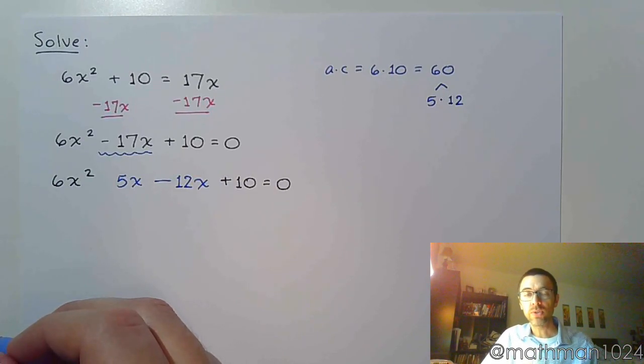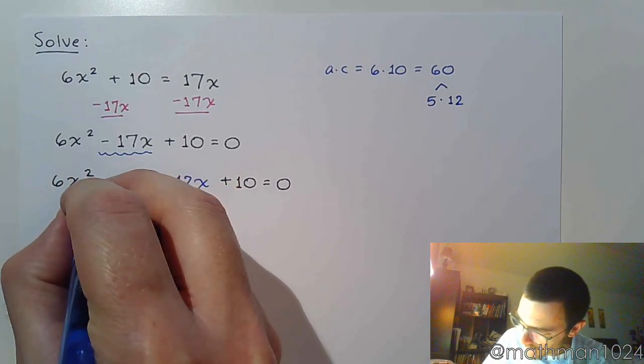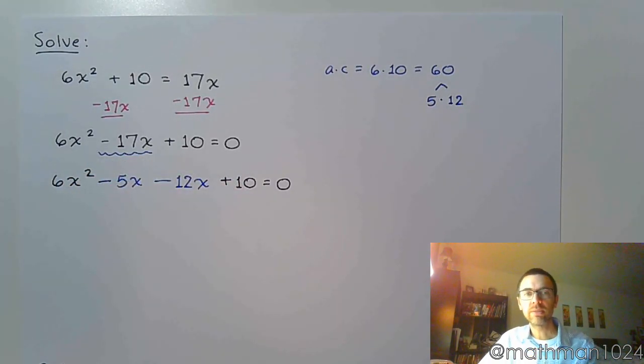Knowing how the signs are supposed to behave to get a negative 17x, that means this guy also has to be a negative. If we've split this middle term correctly, we should be able to factor by grouping without a problem.